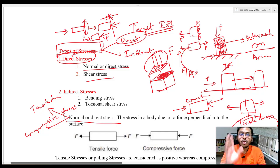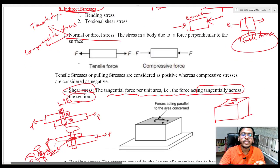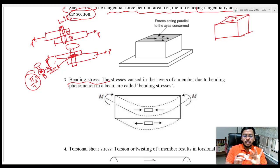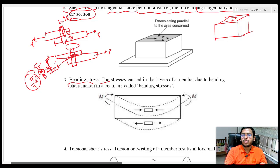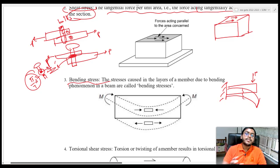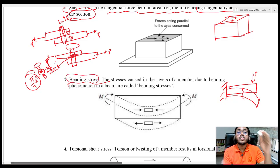Now coming to indirect stresses. Here we are not just applying the load — we are trying to bend the member. What is happening in case of bending stresses? Let us understand bending stresses and torsional stresses — the indirect stresses being generated in your body. Coming to bending stress: imagine you have one beam, one side it is fixed. You are applying a certain load — it will try to bend like this. Because this member is bent, there will be certain stresses being developed in my body and I am calling them bending stresses. This is going to be a very important term for us in future chapters.